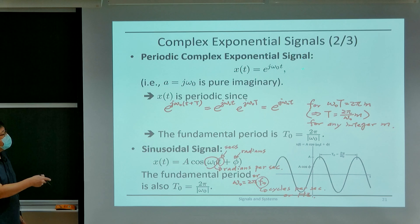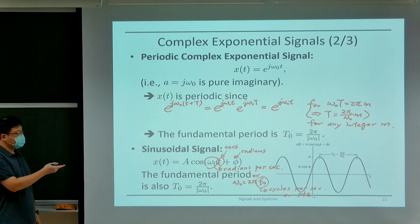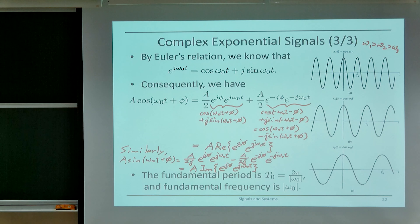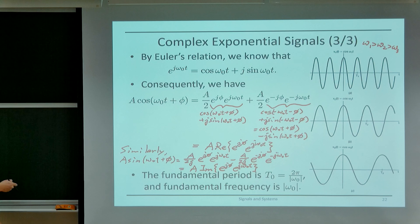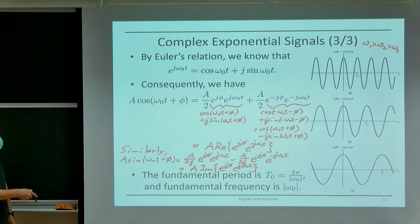This periodic complex exponential is inherently related to sinusoidal signals, mainly due to Euler's relation. By Euler's relation, e^(jω₀t) can be written as a cosine in the real domain and a sine in the imaginary domain. Through some manipulation, this allows us to obtain different expressions for the sinusoid. We can express a cosine as the summation of two complex exponentials with a negative sign difference in the phase, or we can write it as the real part of this complex exponential.